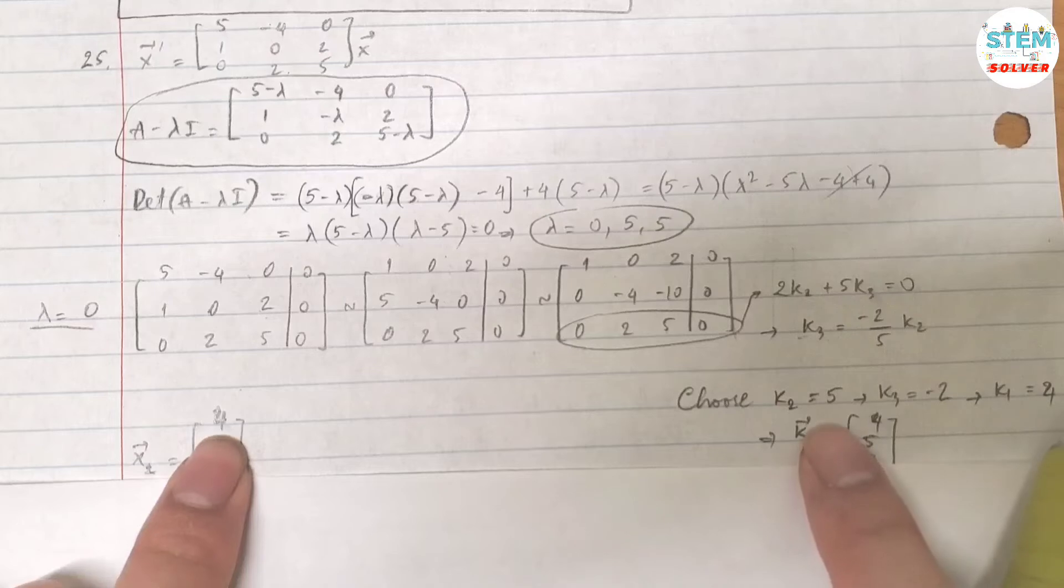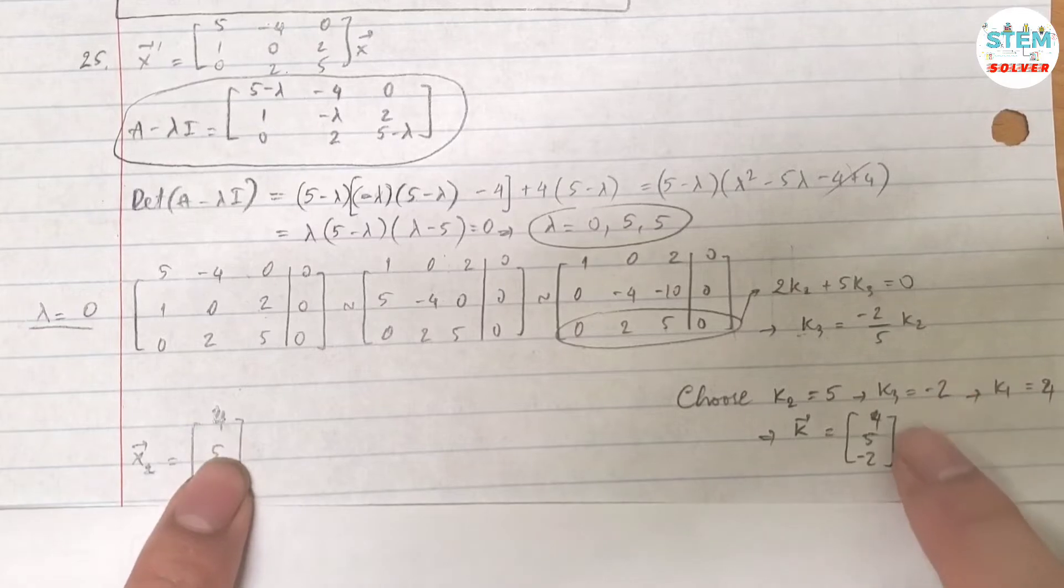So if I choose K2 equals 5, then K3 is negative 2, K1 is 4. Then my vector K is 4, 5, negative 2. Alright. Now that is for lambda equals 2. Now you are going to do the same thing for lambda equals 5.